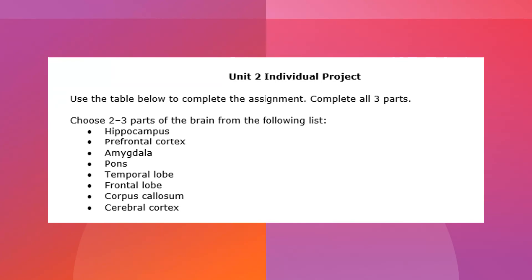The next thing you're going to notice is that it asks you to choose two to three parts of the brain from the following list: the hippocampus, the prefrontal cortex, the amygdala, the pons, the temporal lobe, the frontal lobe, the corpus callosum, and the cerebral cortex. These are your choices for this assignment — you're going to be selecting two to three parts of the brain from this list.